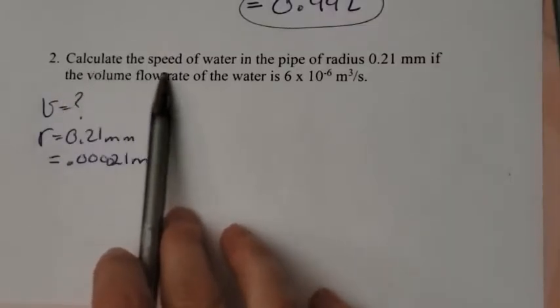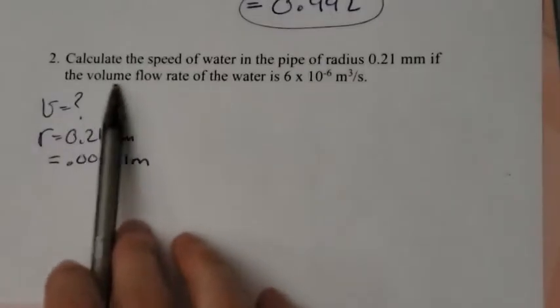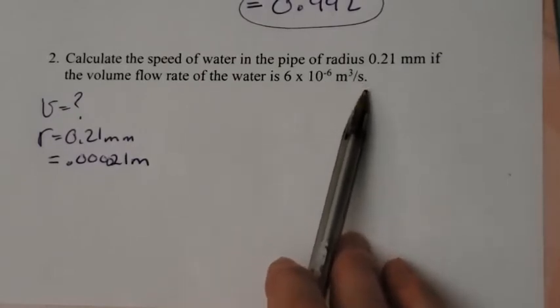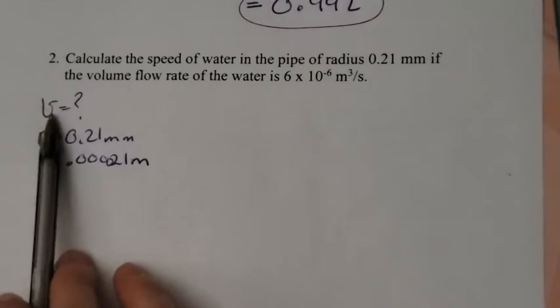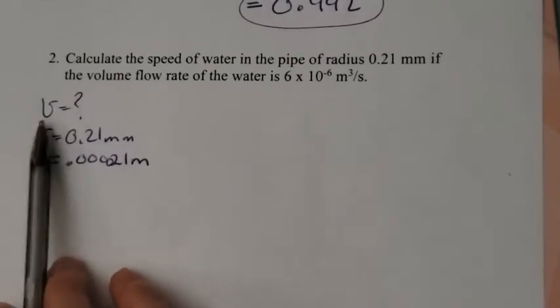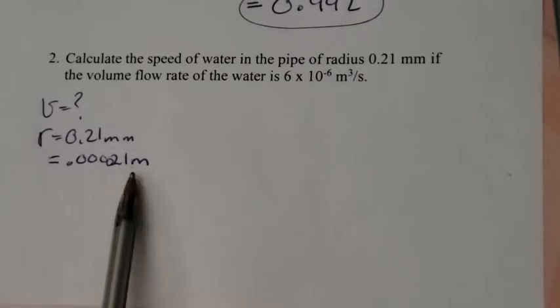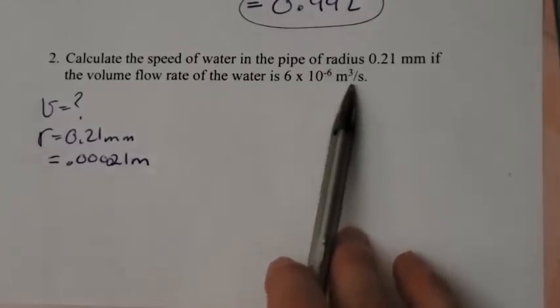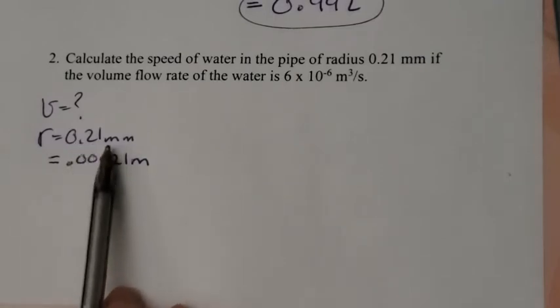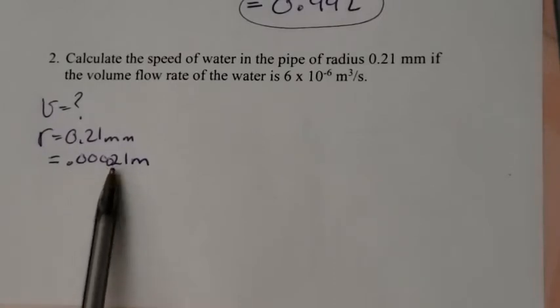Our second example says calculate the speed of water in a pipe of radius 0.21 millimeters if the volume flow rate is 6 times 10 to the negative 6 meters cubed per second. I'm looking for the speed of the water, so I draw a cursive V to tell the difference between volume and speed. The radius is 0.21, but that's a problem because it's in millimeters. I want it in meters because my flow rate is in meters. I divide by a thousand and end up with 0.000021 meters.